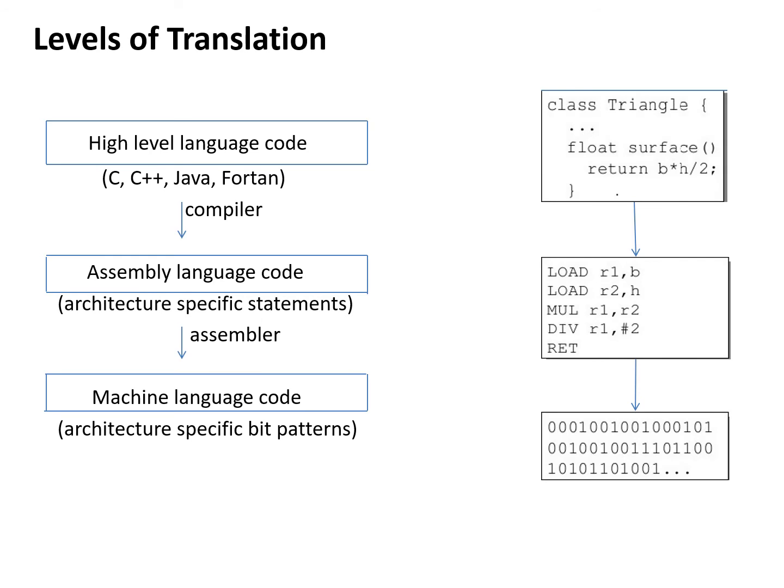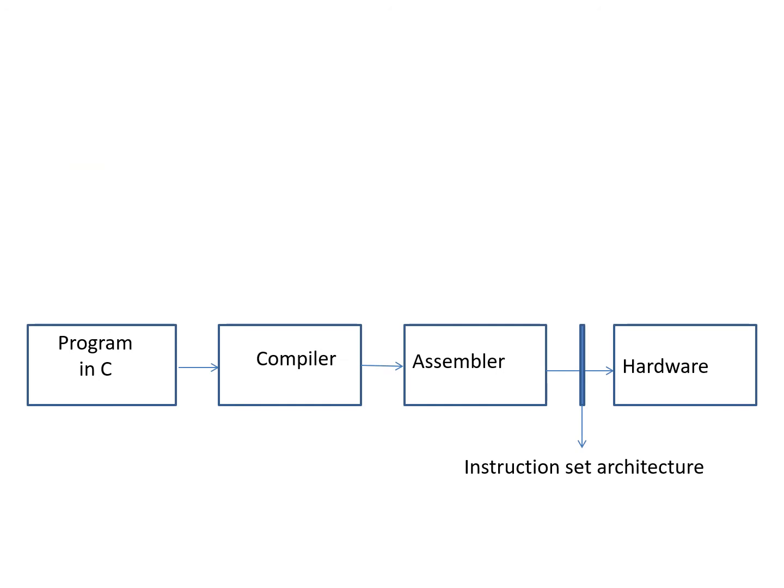This is the levels of translation picture: the high-level language is converted into assembly language by a compiler, then the assembler converts the architecture-specific statements into machine language code consisting of only zeros and ones, which can be executed by the hardware. An example showing the high-level language, the assembly language, and the machine language code is given for your reference. Now we move to a picture showing where the instruction set architecture comes in.